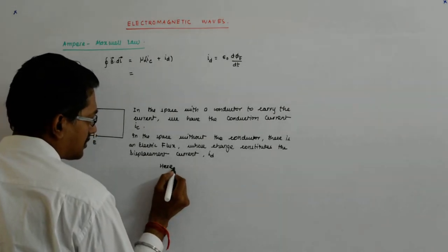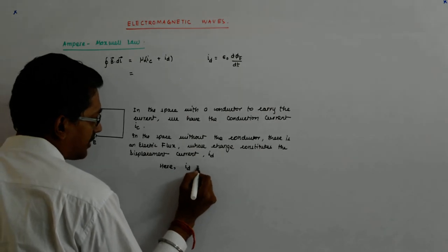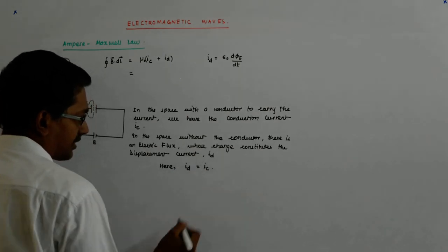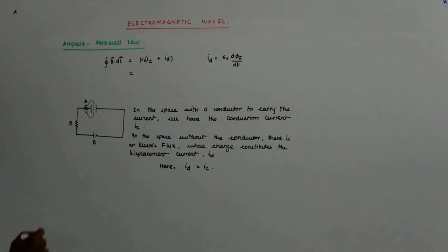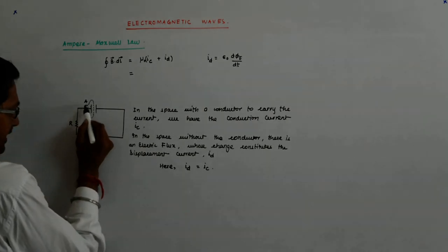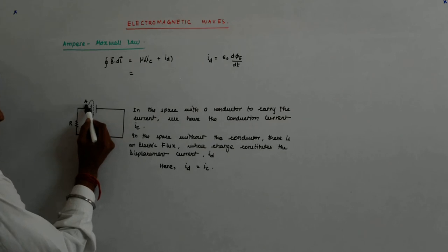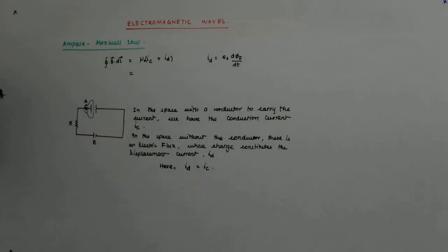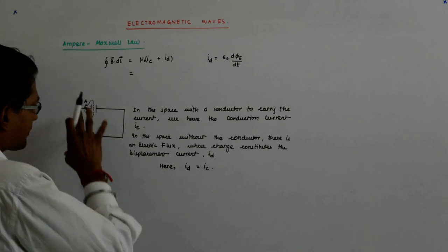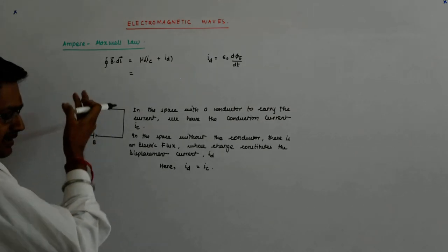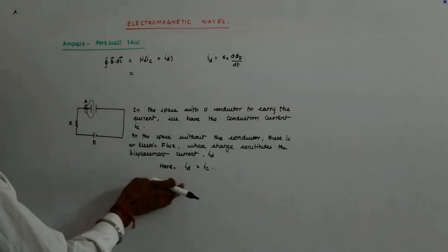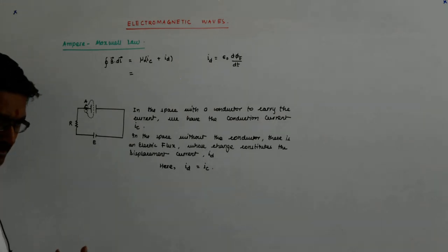Here, our ID is equal to IC. So what happens? If we are taking the conducting current, then that makes the B here some value. If we are taking the displacement current, it is that which makes this the same.